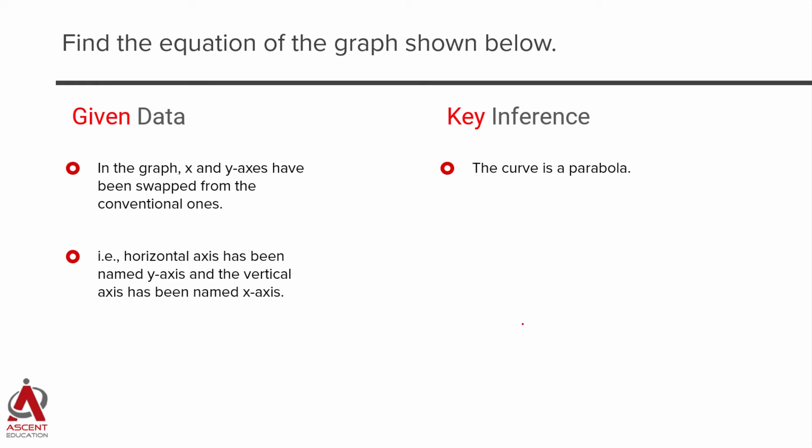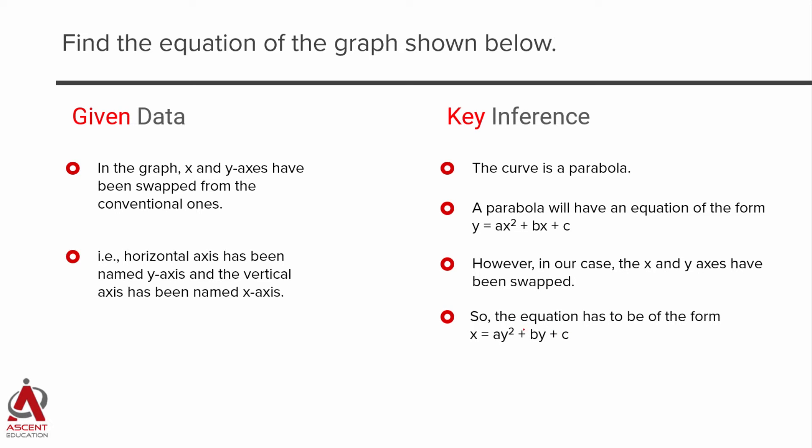The curve if you remember is a parabola. Usually the equation of a parabola is of the form ax square plus bx plus c, but that is when the y axis is the vertical axis and x axis is the horizontal axis. For us, these two have been swapped, so for us the equation therefore is going to be of the form x is equal to ay square plus by plus c. So from the answer choices, if you will have to substitute and check out, we are going to be looking at only those answer choices which resemble this thing. So ay square plus by plus c, x is equal to this, is what should be our answers.